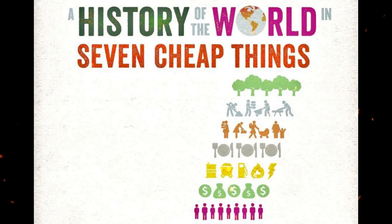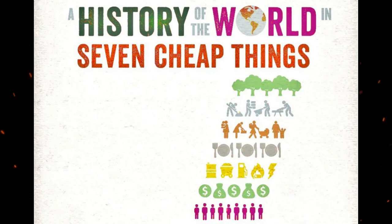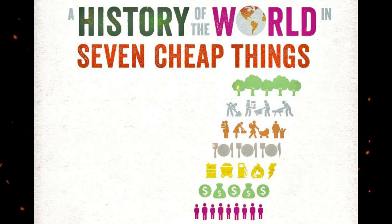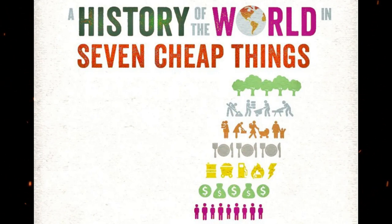Each chapter introduces its subject — one of the cheap things — by tracing its origins in the era of colonial expansion. All but one are traced directly to Christopher Columbus, who comes to stand as a symbol for capitalism itself.